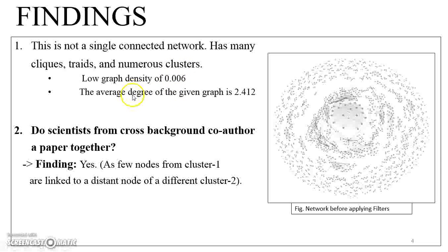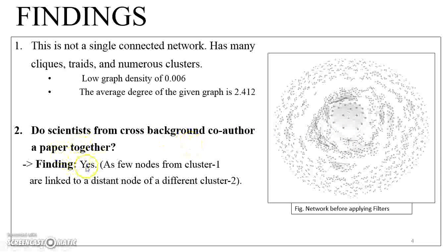The average degree of the graph is 2.412, which means each author has at least two to three collaborators. Also, at the center of the graph, we see that a few nodes from cluster 1 are connected to a distant node from cluster 2, which means that scientists from cross-backgrounds or cross-clusters do co-author papers together.